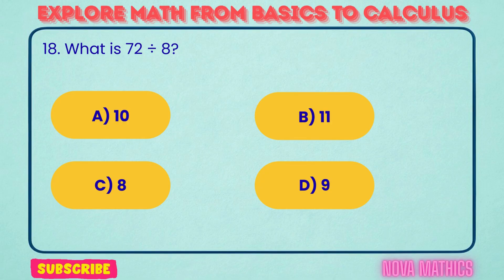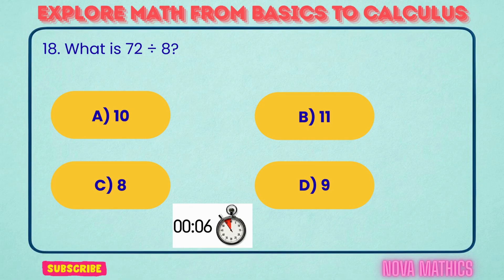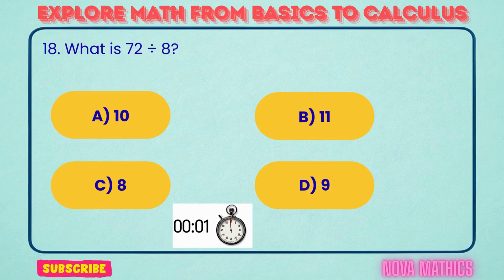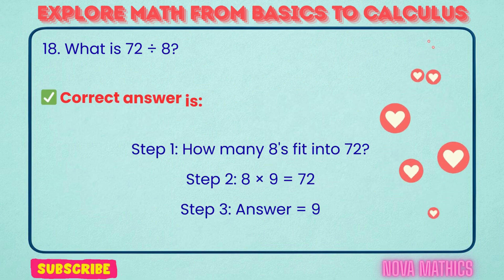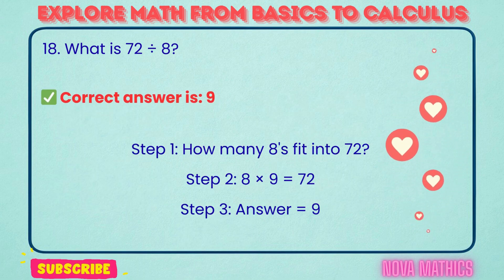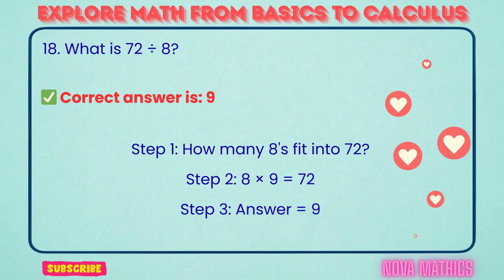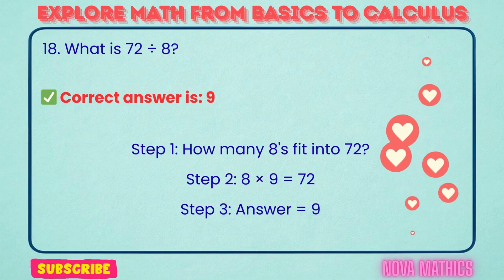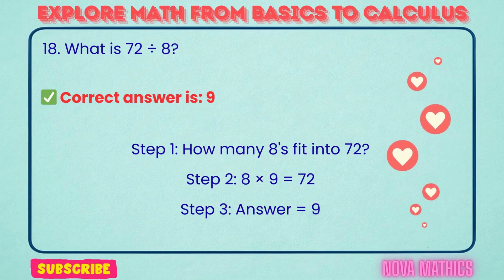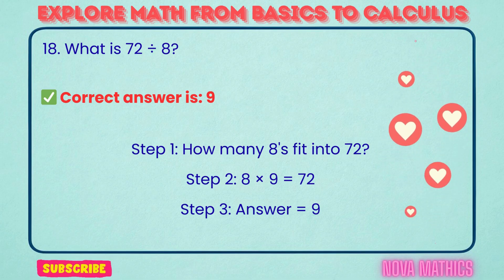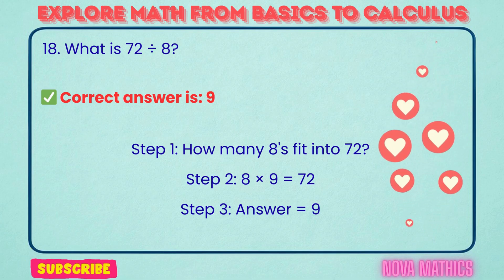18. What is 72 divided by 8? Correct answer is 9. 72 divided by 8 equals 9. We find this because 8 times 9 is 72.